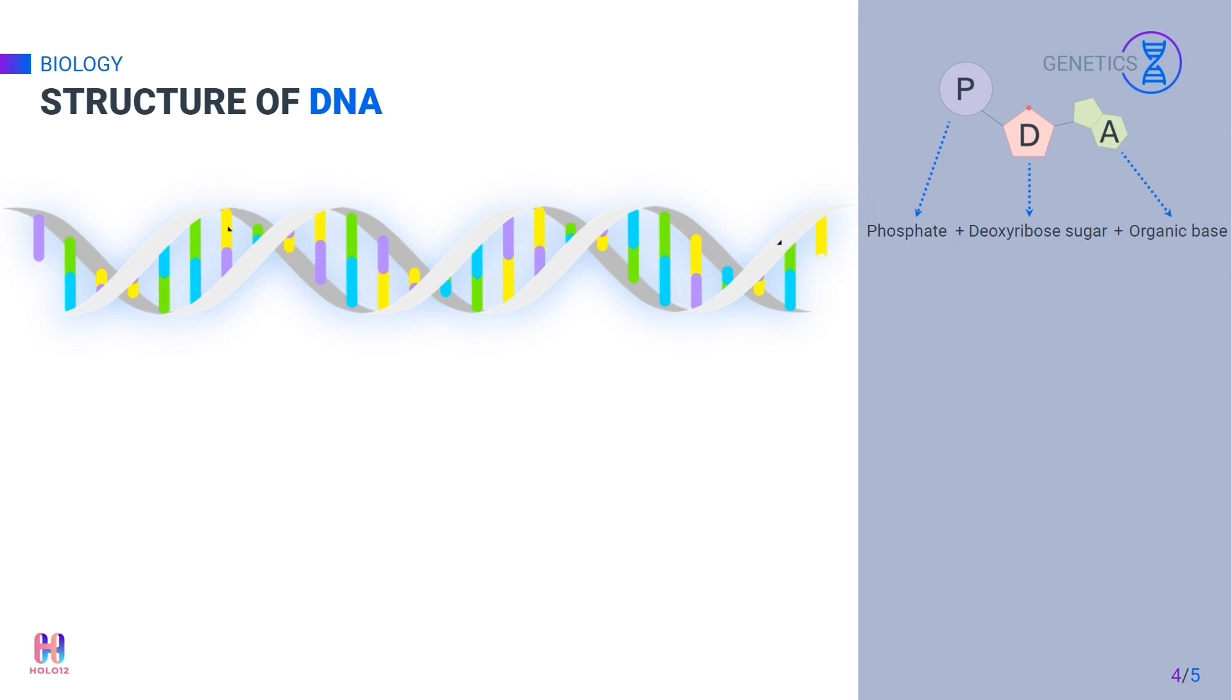Each nucleotide is formed of three parts: a deoxyribose sugar, a phosphate molecule, and a base, also known as an organic or nitrogenous base.